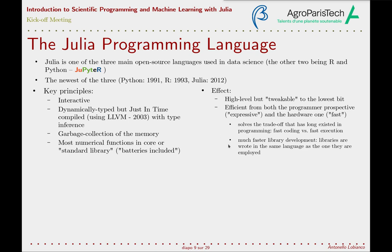One very important consequence is that this leads to very fast development of libraries — which in Julia we call packages — because they don't need to be written in another language to be efficient. They can be written in the same language as the code that uses them. This means that if you already know Julia as a user of a library, it is much easier to cross the barrier and become a contributor, hacking and contributing modifications to the library yourself.